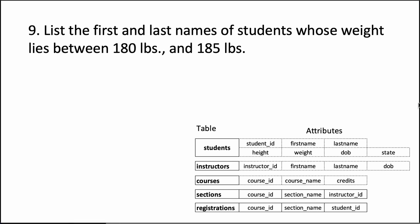This problem is very similar to the previous one, except that this time we want only students whose weight is between 180 and 185. Whenever you have one column whose value falls within a certain range, you can write it in the following way.